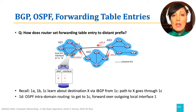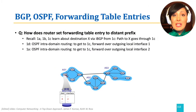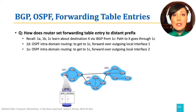The result of inter-AS and intra-AS routing together translates to writing the interface to take towards a final external destination. With a similar procedure at 1a, it knows 1c is used to reach final destination x. OSPF intra-domain routing tells it how to get to 1c, which is through interface 2.